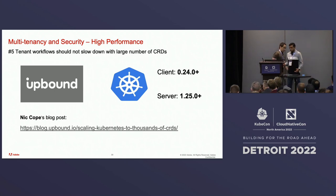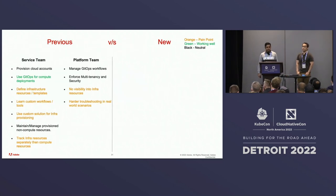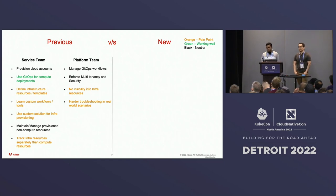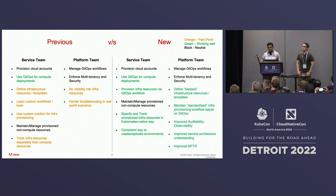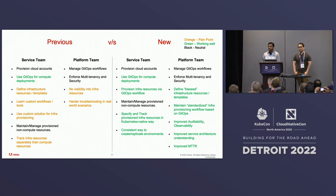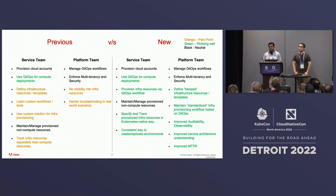Thanks, Manabu, for going into all those multi-tenancy and security requirements in detail. Let's compare the previous and newer developer experience. The service team is now happy — they can use GitHub for both compute and infrastructure deployments and track provisioned infrastructure resources in a Kubernetes-native way. The platform team is even happier: they can define blessed composite resources in consultation with security teams, roll them out to service teams, and have improved auditability and observability of provisioned infrastructure. With an improved understanding of service architectures, we've reduced mean time to resolution when encountering issues or outages.